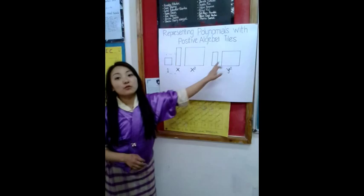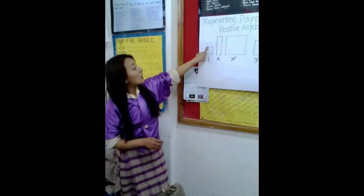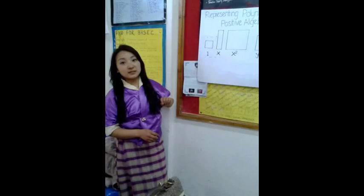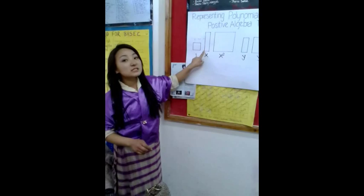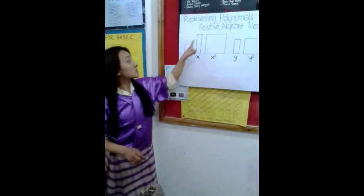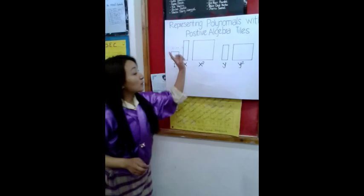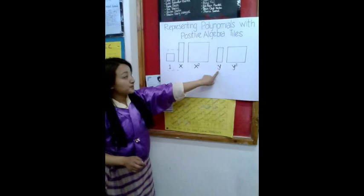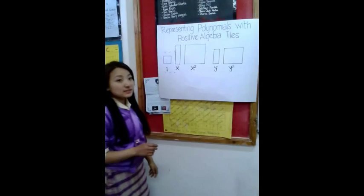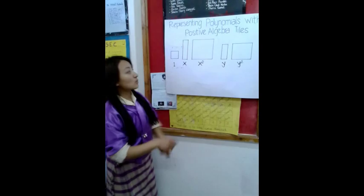The first one is 1. It represents a square tile with one unit wide and one unit length. Are you all clear? Yes, ma'am. X is a rectangular tile that has one unit wide and X unit length. And when it comes to Y and Y squared, it is a rectangular and square tile that has width and length smaller than what we have for X and X squared.